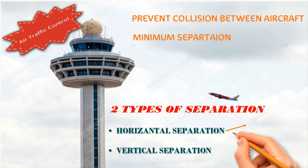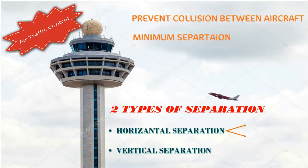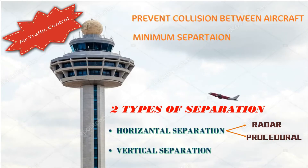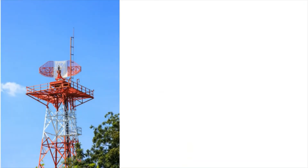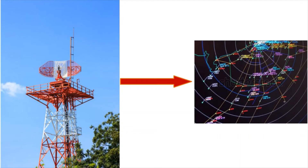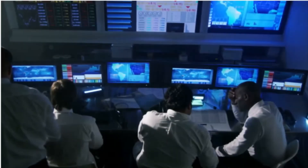There are two ways of achieving horizontal separation. One is using the radar method and the other is using the procedural method. In this video, let us understand horizontal separation using radar. Radar picks up the exact positions of all aircraft in the sky that are within the range of the radar equipment and plots them on the radar screen. This screen is called a situation display. Air traffic controllers refer to this screen and provide the required radar separation between aircraft.